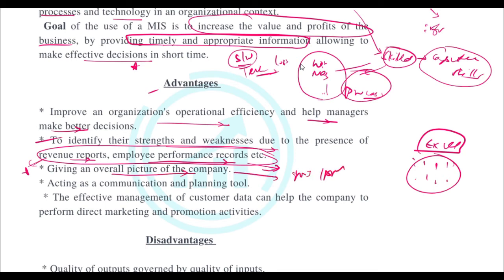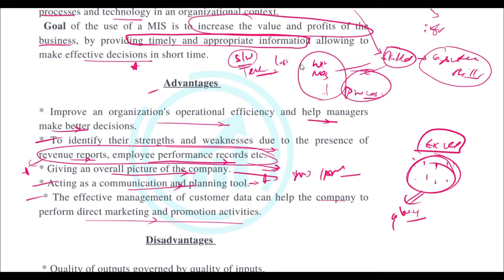MIS also acts as a communication and planning tool — the information helps you plan future actions. Additionally, effective management of customer data can help the company perform direct marketing and promotion activities. Once you study and perform proper functions on customer data, it helps you target customers with targeted advertisements and carry out promotional activities.